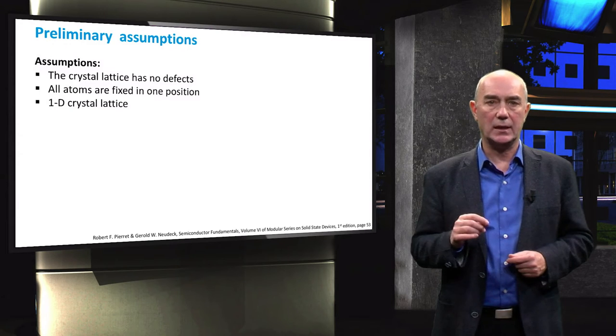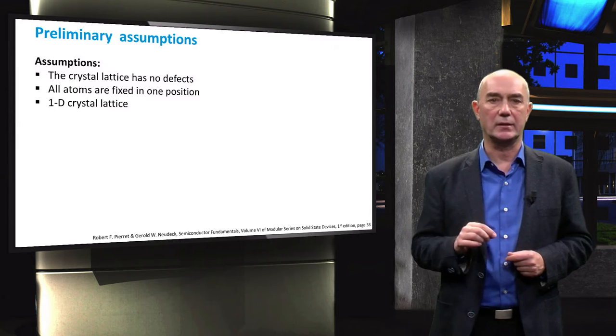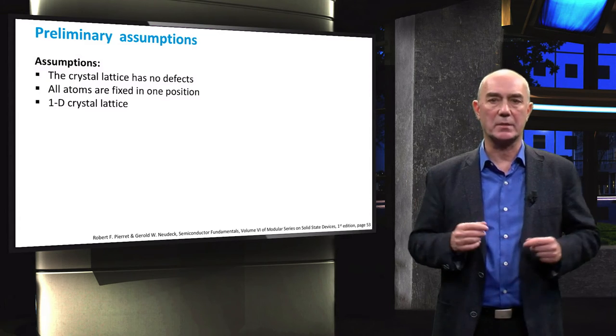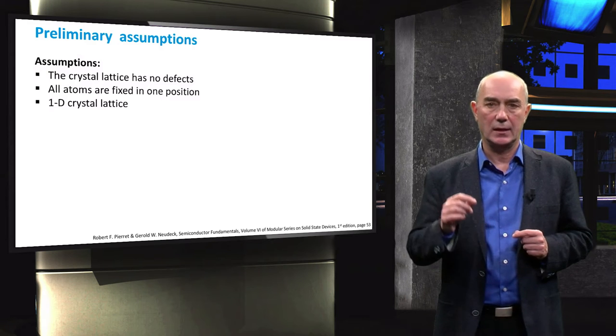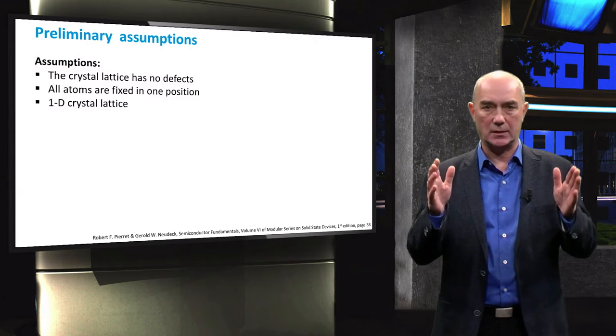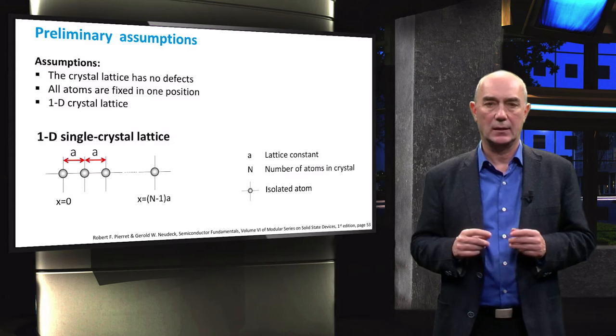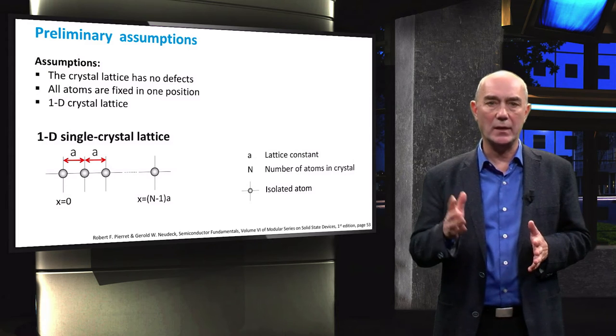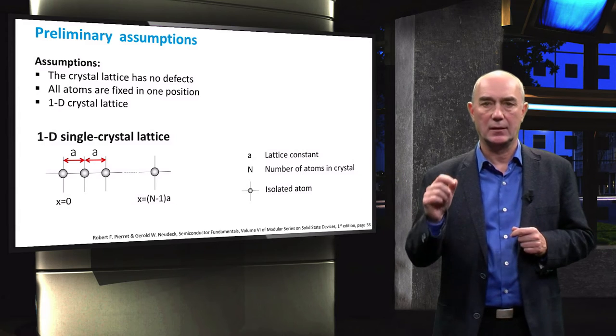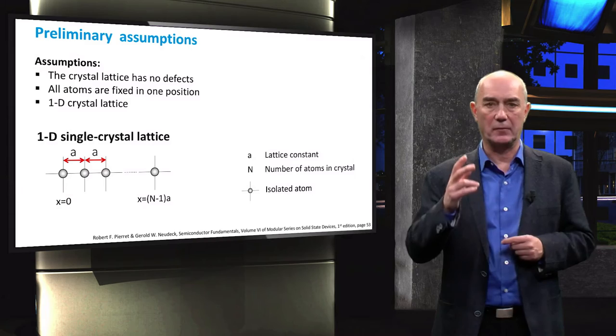Since the quantum mechanical approach to determine the energy of an electron in a real solid is rather complex, we will start by making some simplifying assumptions. Let's consider a case in which the lattice structure is perfect and all the atoms are fixed in one position. Let's then consider a one-dimensional crystal lattice as shown in the slide, with lattice constant equal to A and composed of n atoms.